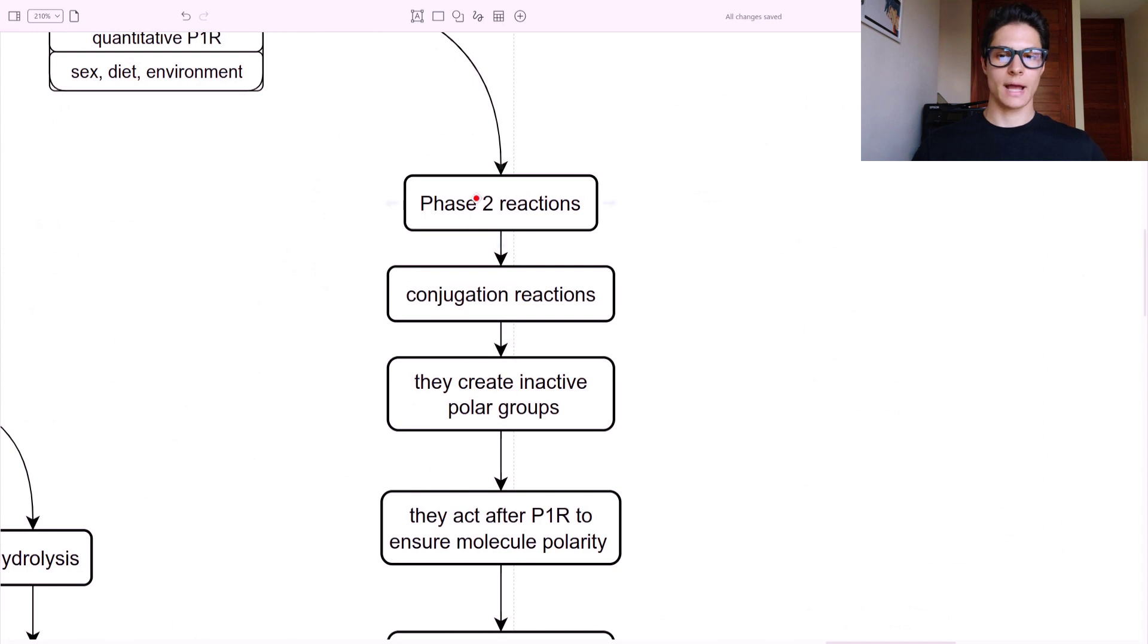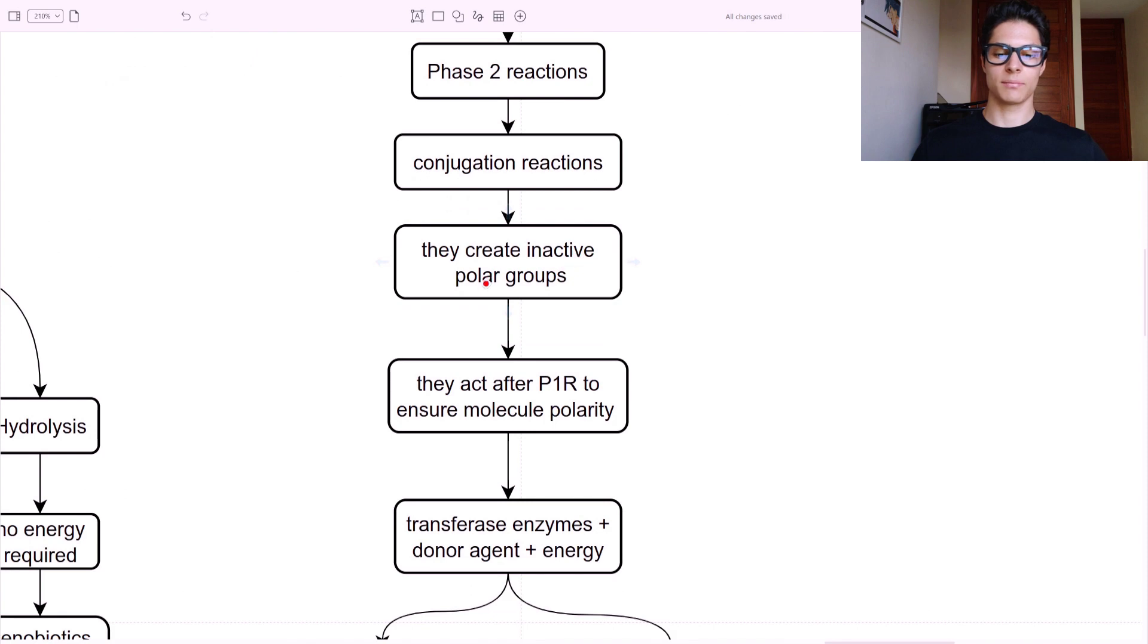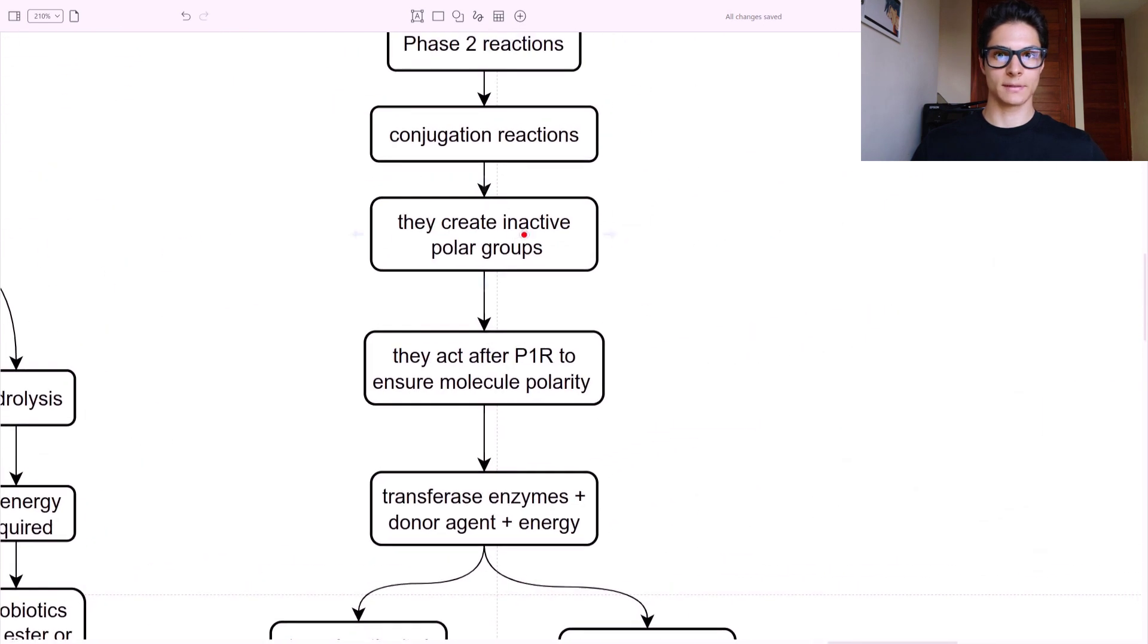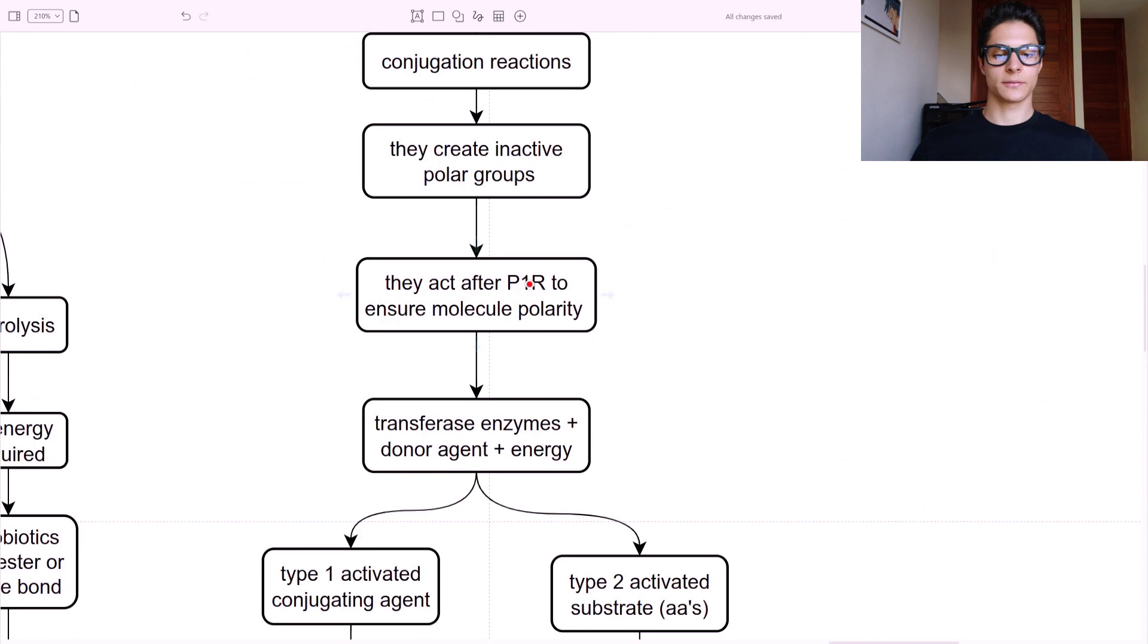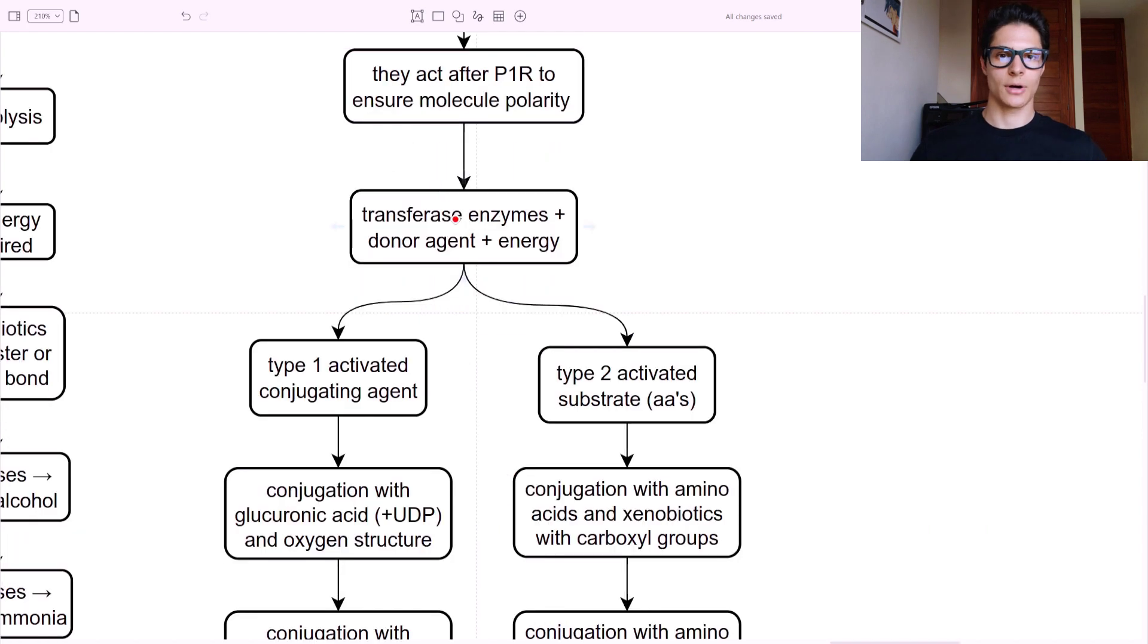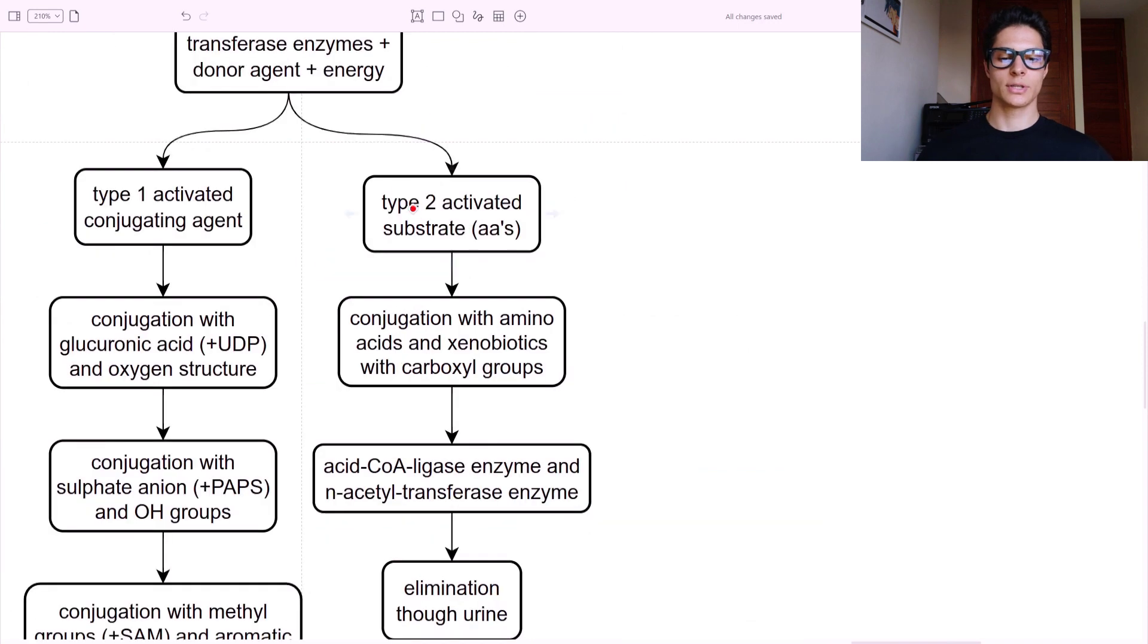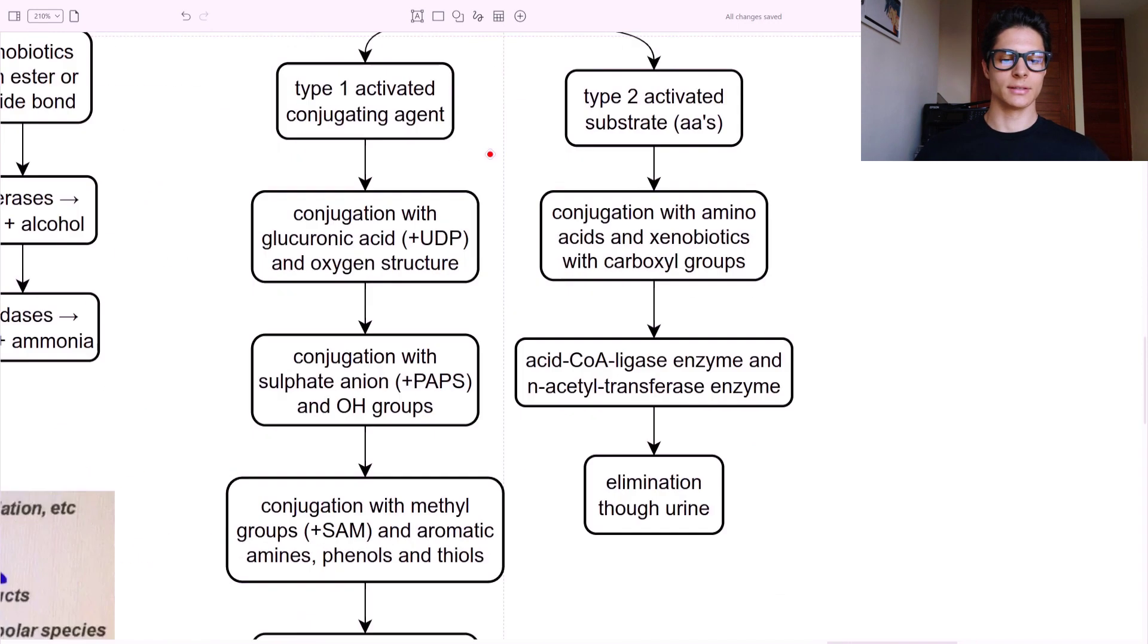And then the phase two reactions. These are the conjugation reactions. They create inactive polar groups. Inactive. As you can see here, they are active in phase one. Here are definitely inactive polar groups. They act after the phase one reactions normally. And this is to ensure the molecule polarity. So how to do a phase two reaction? We need a transferase enzyme, a donor agent, and energy. Type one - the agent is activated. Whereas type two - the substrate is activated.